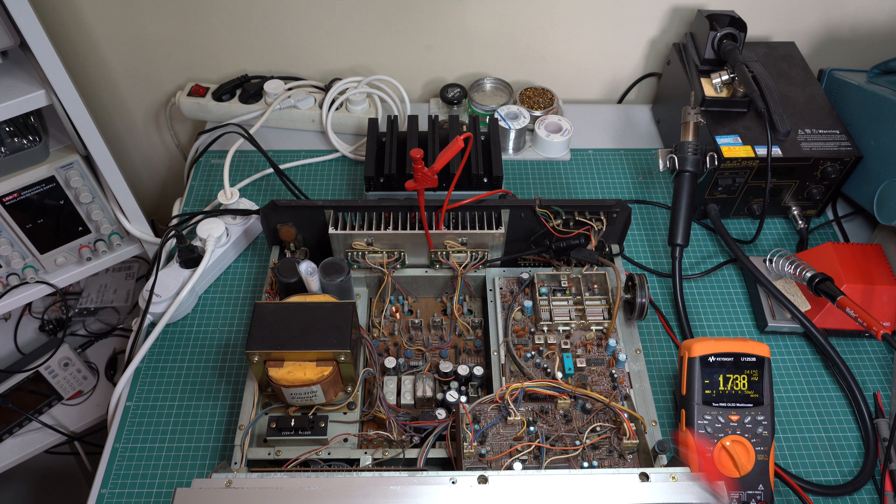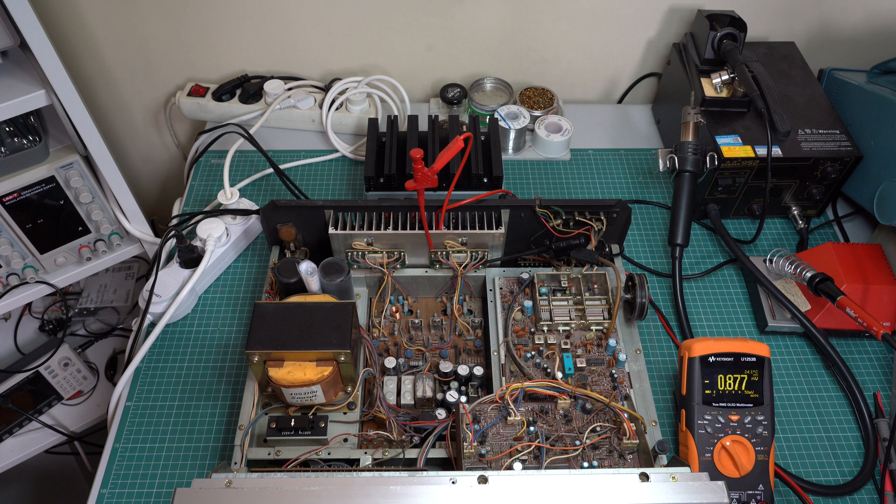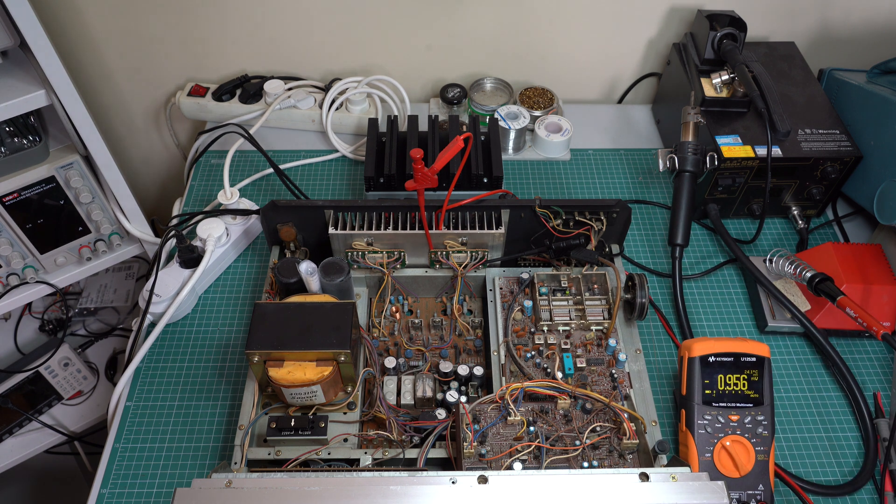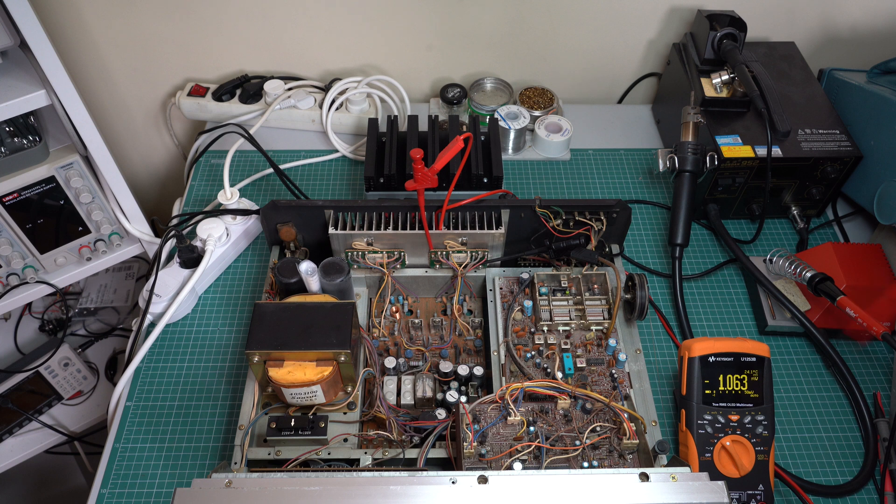The manual says that you need to let the amplifier warm up for at least three minutes and then you should aim for 3.3 millivolts here, which gives us a current of around one milliamp through the power transistors. Now, as you can see, this voltage is really unstable, so I will leave the amp running for like an hour or so with the cover on to make sure that it reaches its final temperature before doing this adjustment.